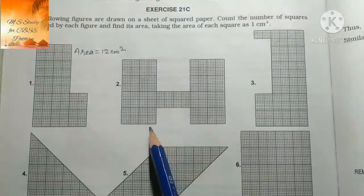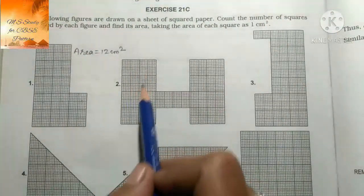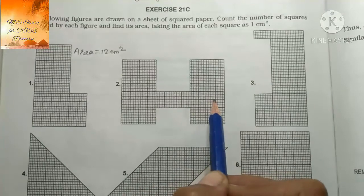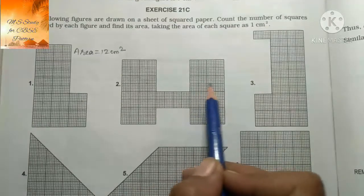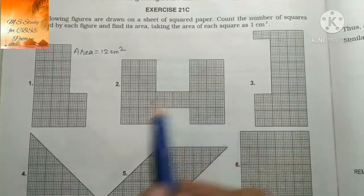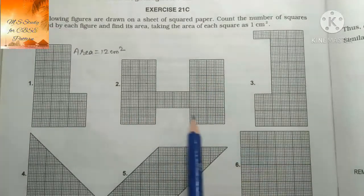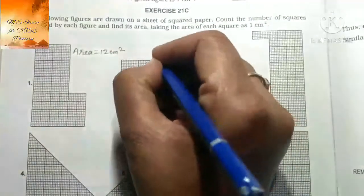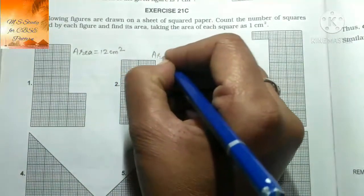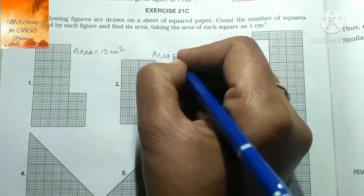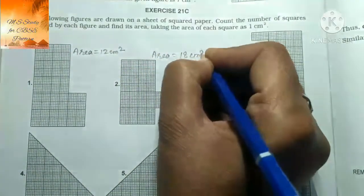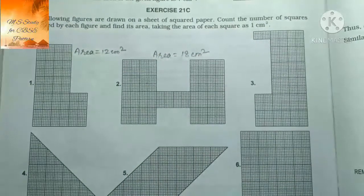Next वाले का find कर लेते हैं। Squares count करने पर 1 से 18 तक आते हैं। Area equals to 18 cm²।